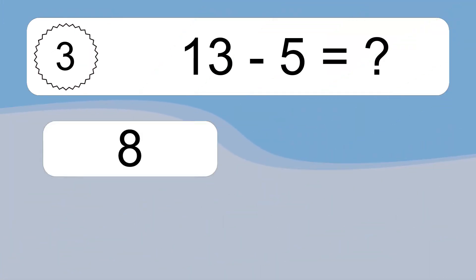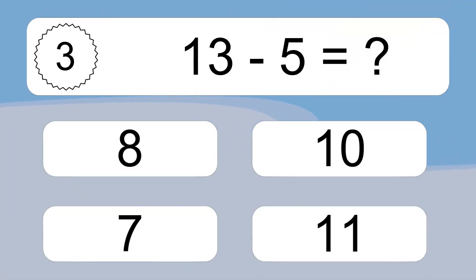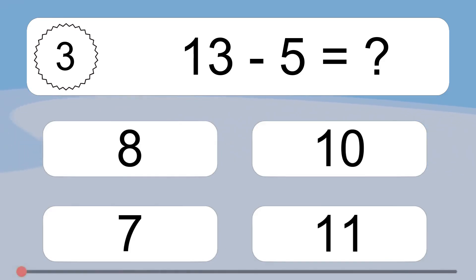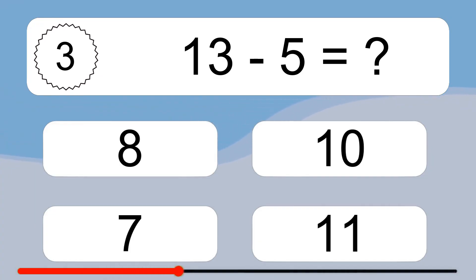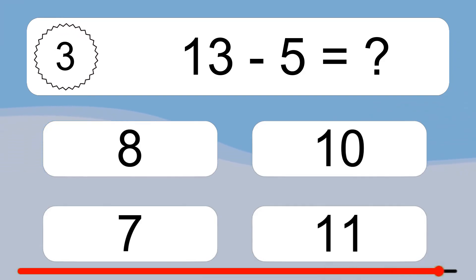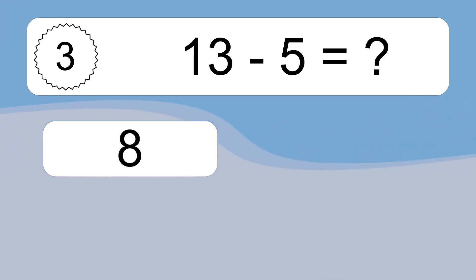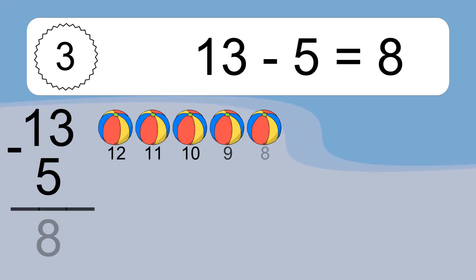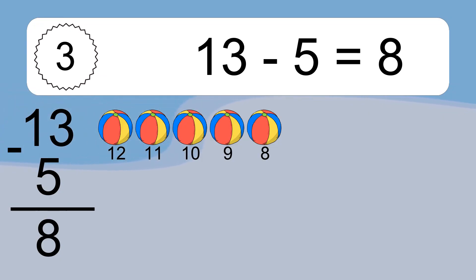13 minus 5 equals what? 13 minus 5 equals 8. Let's count it. 12, 11, 10, 9, 8.